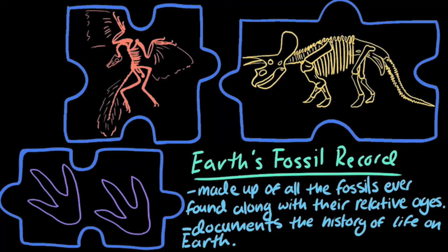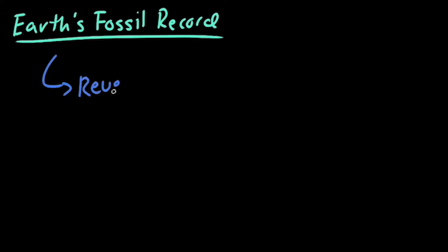By studying the fossil record, scientists can see how life on Earth has changed over evolutionary time. The fossil record allows us to see patterns of evolutionary changes that have happened throughout Earth's history.